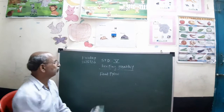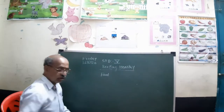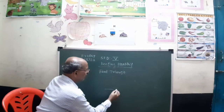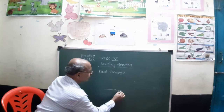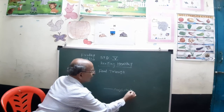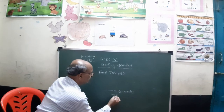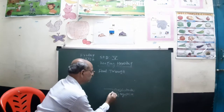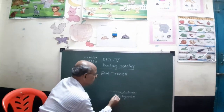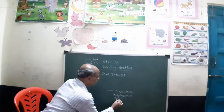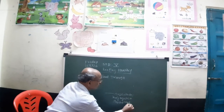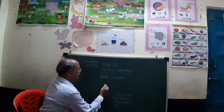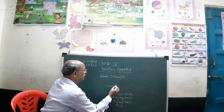Now we will see what is the food pyramid, also called the food triangle. At the base of the food pyramid there are carbohydrates, vegetables, sprouted seeds, and fruits.